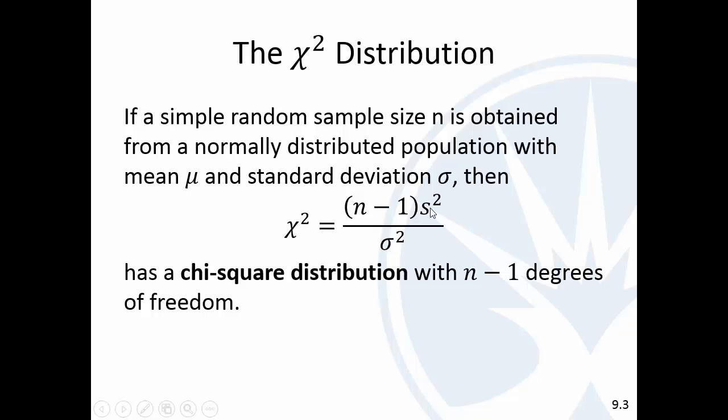It's based on a ratio of the sample standard deviation over the population standard deviation. So if we looked at all the possible samples from different sample sizes and looked at how they were distributed, it would follow this chi-squared distribution.